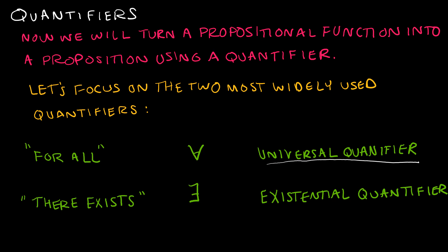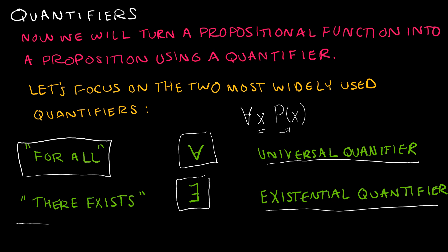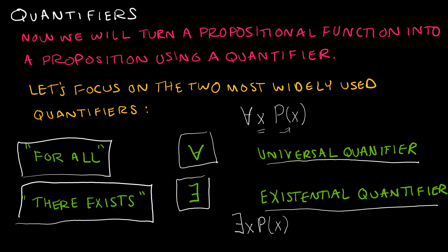The universal quantifier symbol is the upside-down A, and we say it as 'for all.' So if I were to write 'for all x, p of x,' that would mean for every x, p of x is true. We'll talk about both quantifiers in detail on the following slides. The other is the existential quantifier — the backwards E — and that means 'there exists.' So we're saying there exists some x such that p of x is true.